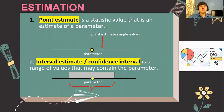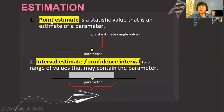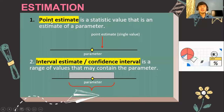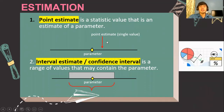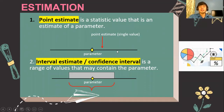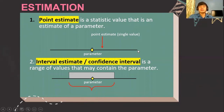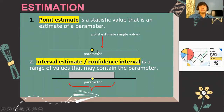There are two types of estimates. The first one is when you report a single value — that is what you call a point estimate. It is a statistical value that is an estimate of the population. Look at that single value here on our horizontal line; that value represents a single value.